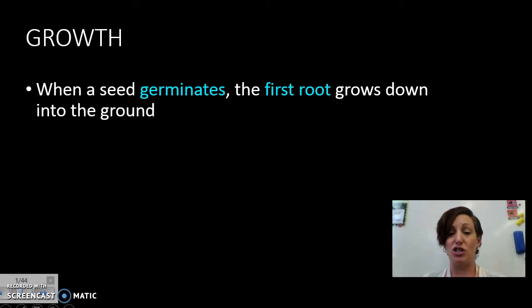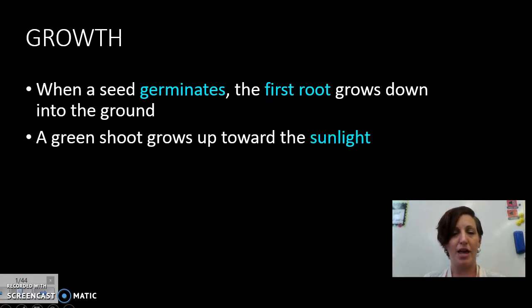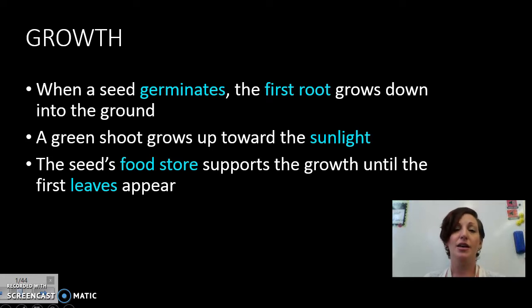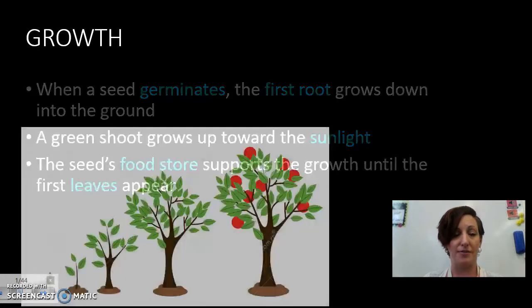When a seed germinates, the first root grows down into the ground and then a green shoot grows up towards the sunlight. The seed's food store supports the growth until the first leaves appear and then open out to the sunlight.